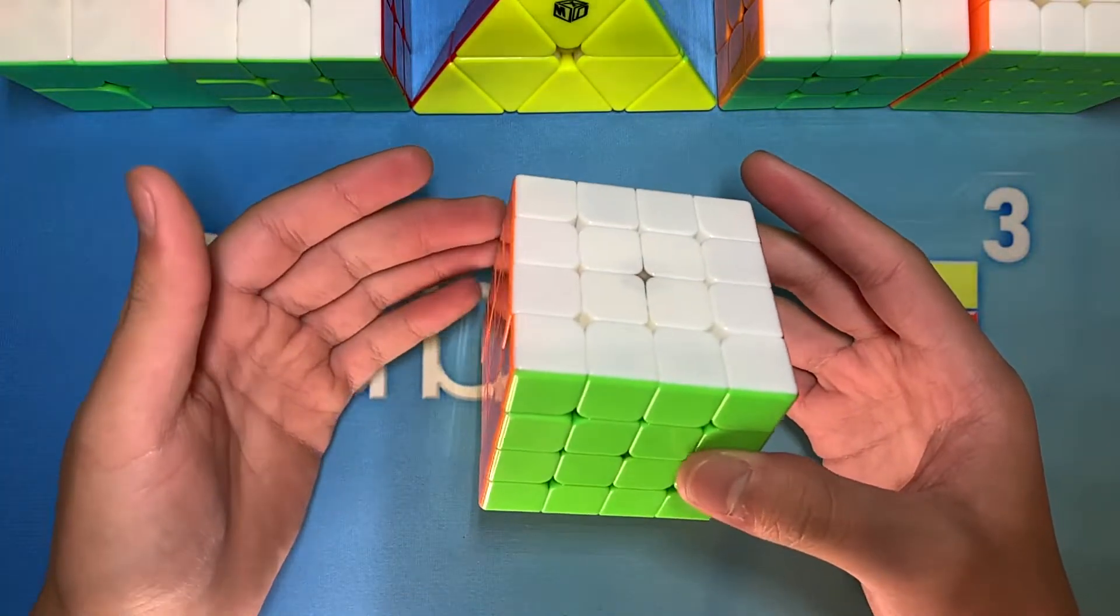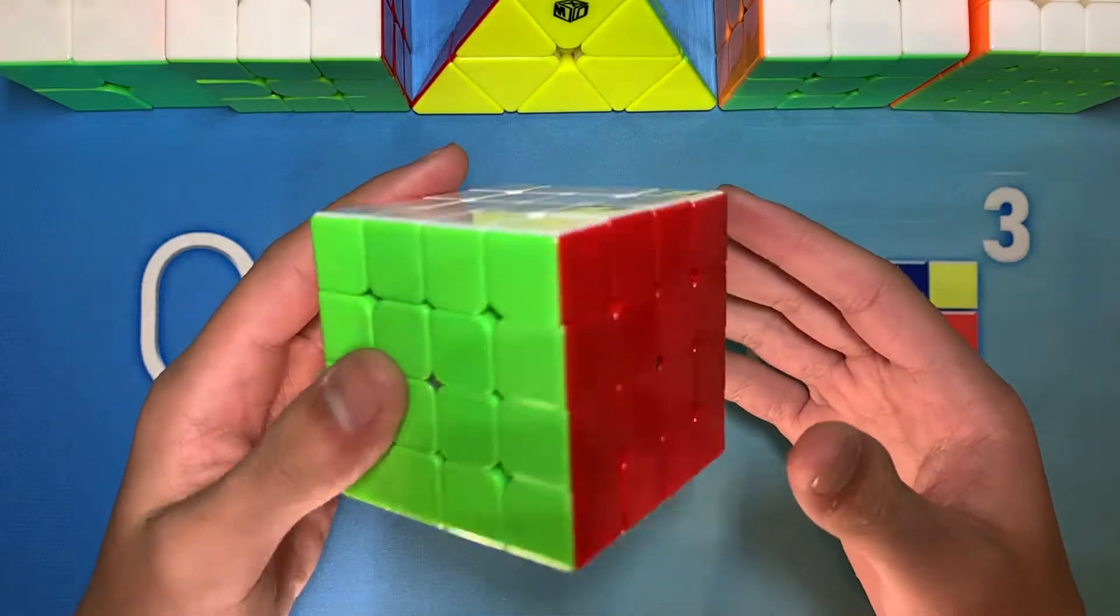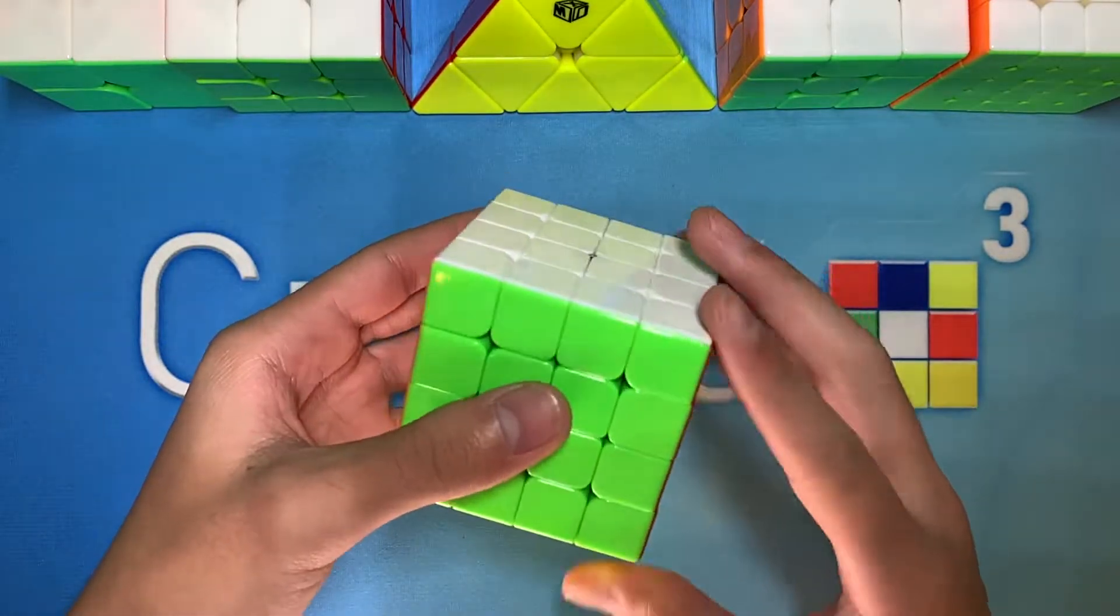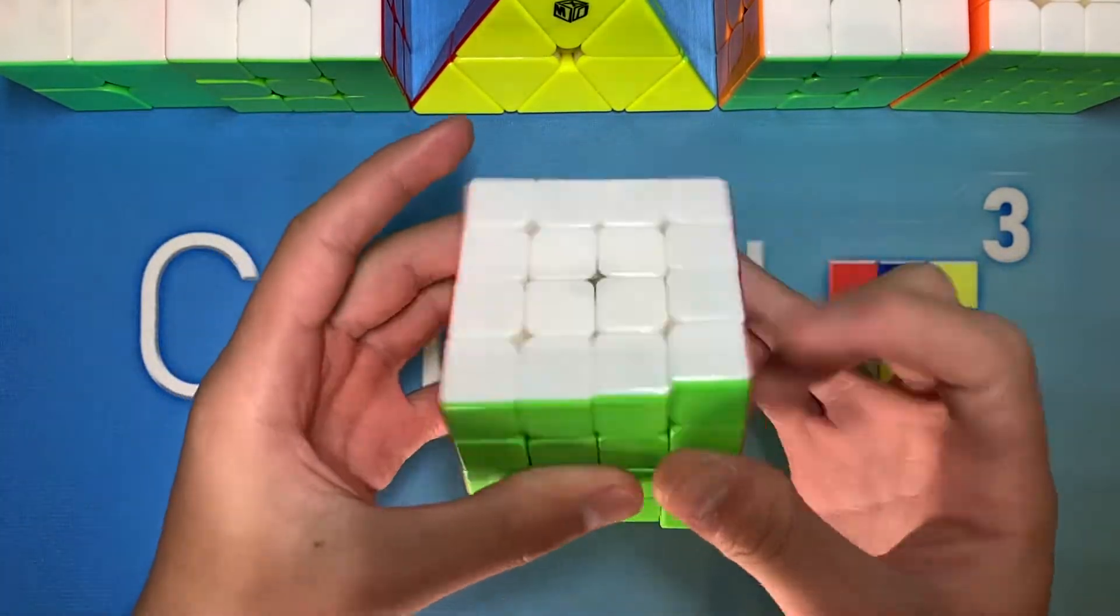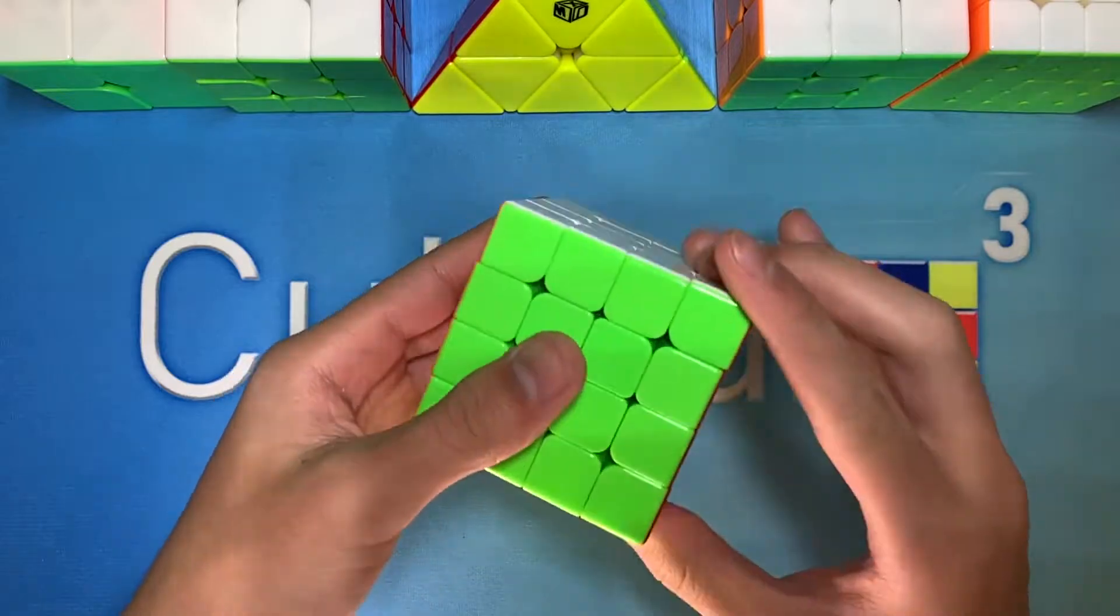My main goal, as it has been for a while, is to get a sub 40 average. This goal is a little ambitious for me, as I'm a little out of practice when it comes to 4x4, but I'll still go for this average, as I've been going for it for a while.